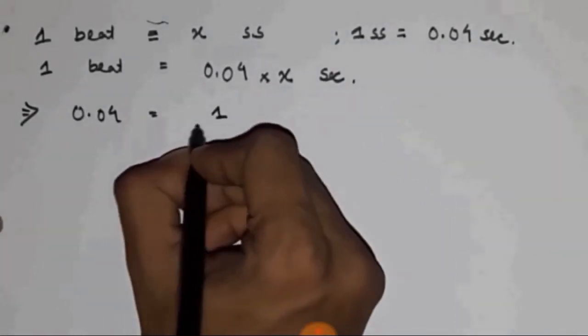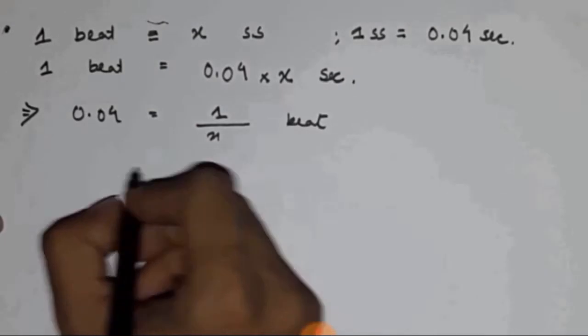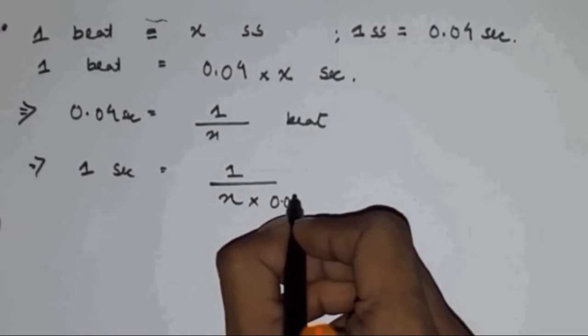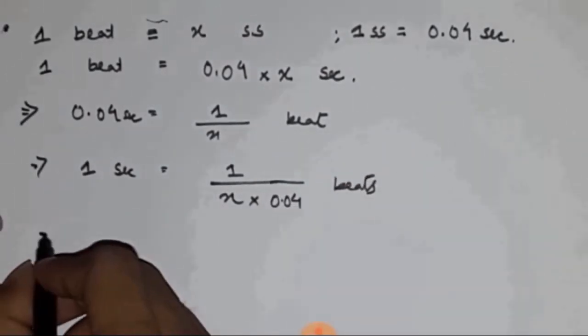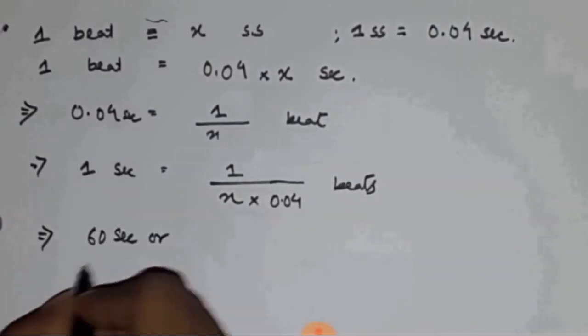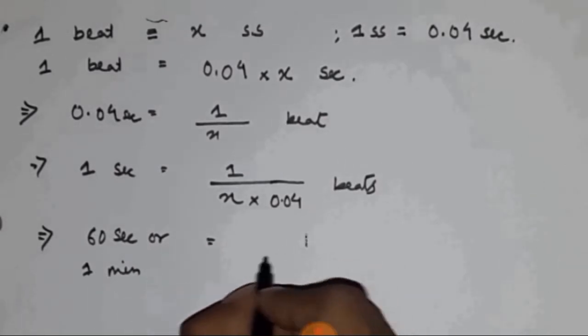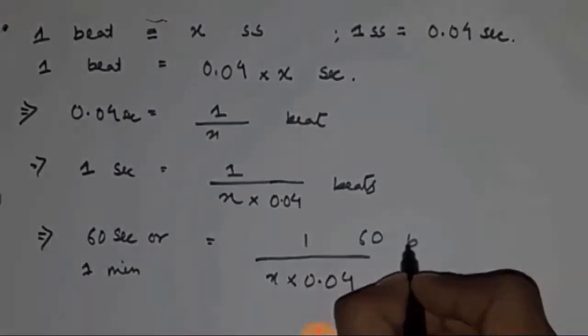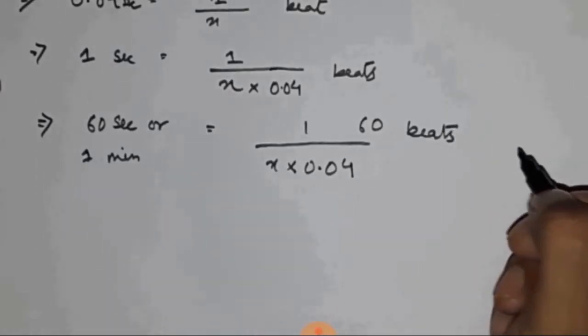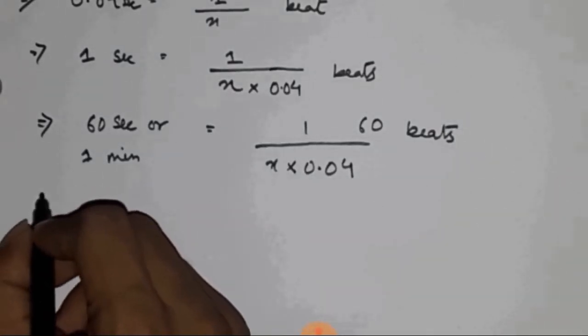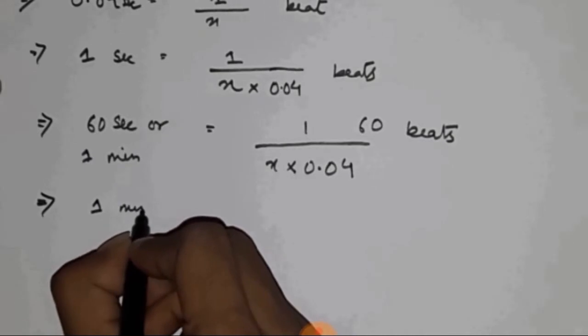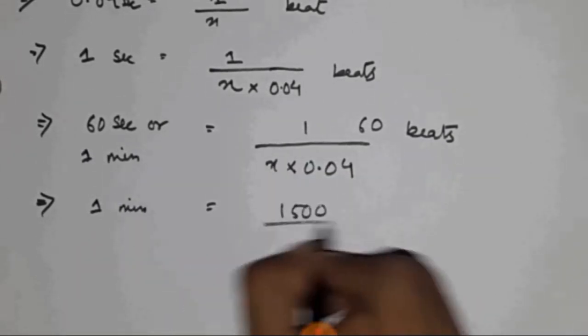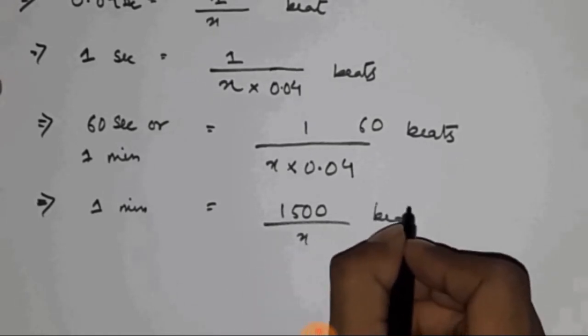Now, 0.04 seconds actually corresponds to 1 by X beat. By simple mathematical calculation, we see 1 second corresponds to this much of value, and 60 seconds, because we are going to take for 1 minute, which will give us the formula this many beats. Let me get a calculator to calculate this. So, 1 minute, this will be equivalent to about 1,500 divided by X number of beats.